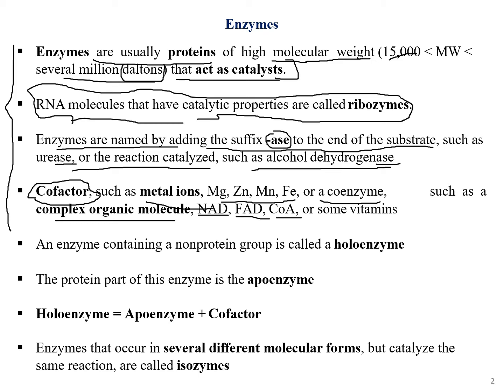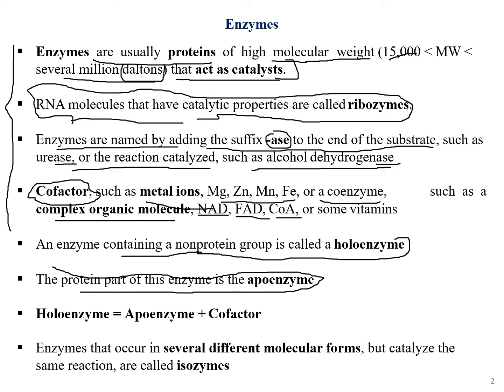An enzyme containing a non-protein group is called a holoenzyme. The protein part of the enzyme is called the apoenzyme, and the non-protein part is the cofactor. So: holoenzyme = apoenzyme + cofactor. This is something important to remember.